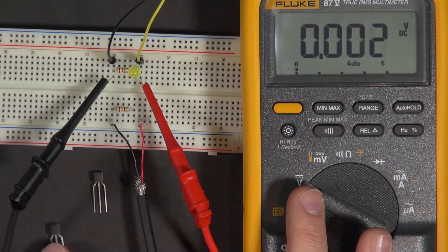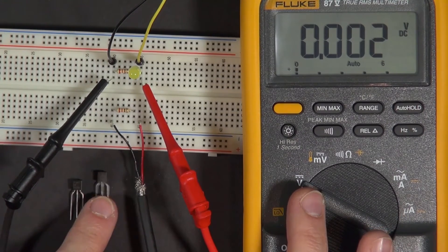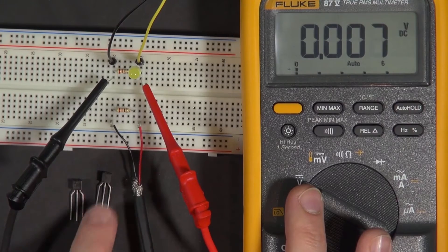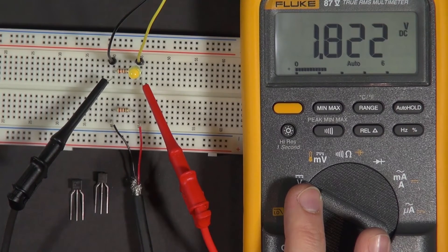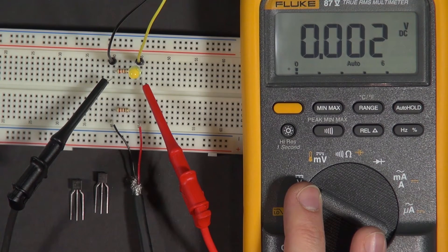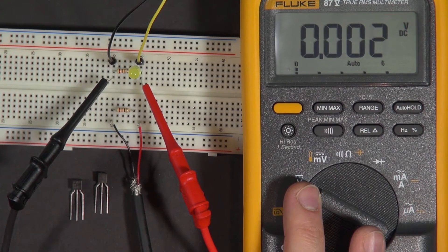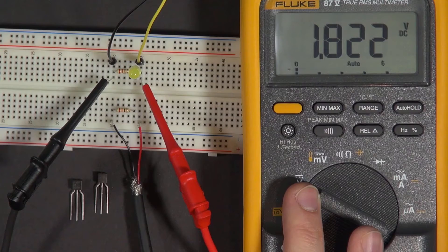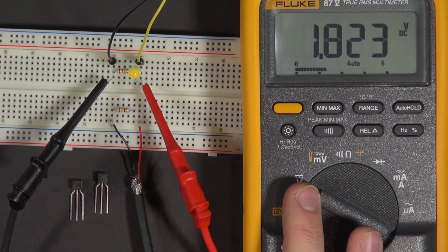These are transistors. Hopefully you can see them down there. Basically a transistor can be thought of in a couple of ways. It can be thought of as a switch or a current amplifier. Don't worry too much if that doesn't make sense.